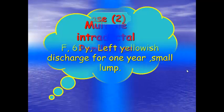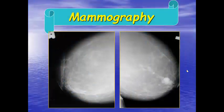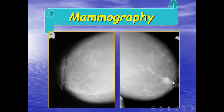This is a case of multiple intraductal papillomas. Another case: a 61-year-old with left yellowish breast discharge for one year who felt a small lump. The mammogram shows a lobulated, iso-dense mass with lobulated outline and a tubular structure seen here also. The mammogram can be assessed as BIRADS 3-4, but a spicule seen here raises the BIRADS to 4 until we do ultrasound.